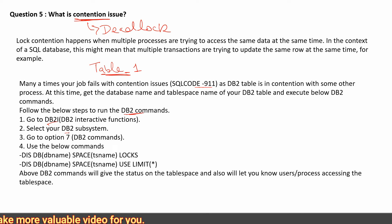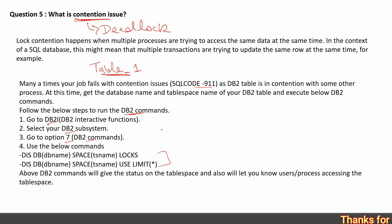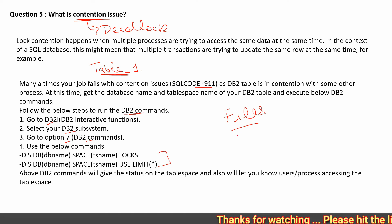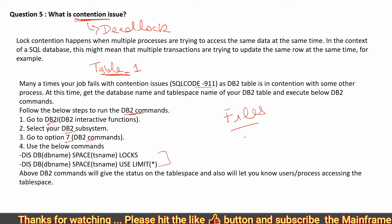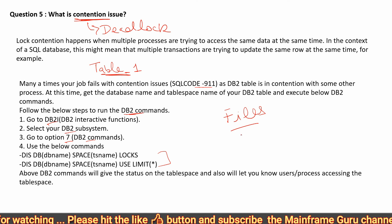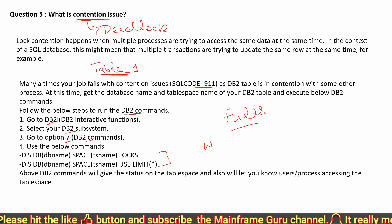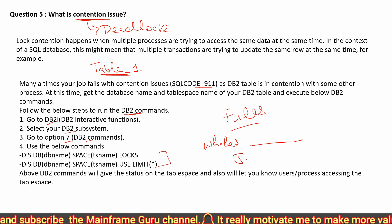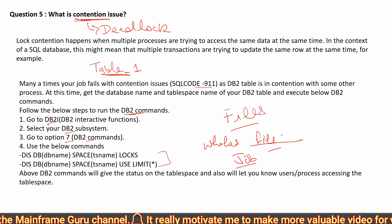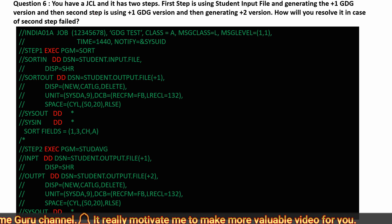You can access DB2I, go to the DB2 subsystem, then navigate to option 7 (Command) and use various commands to check contention. The same issue happens with files: if one file is in edit mode by one job and a second job also tries to update that file, you will get a deadlock. You can use the WHO command on the file to find out which job is currently using it.